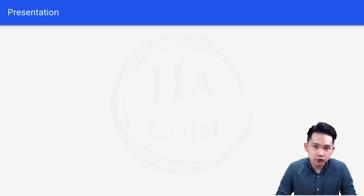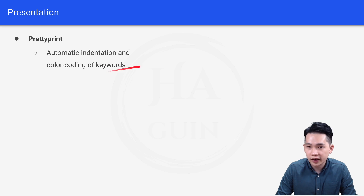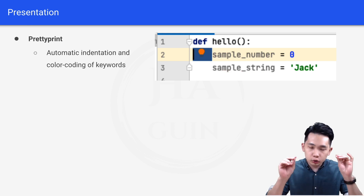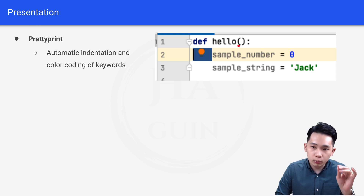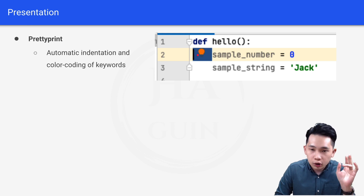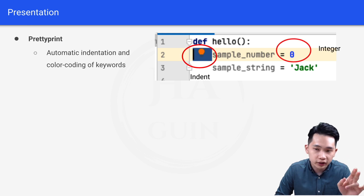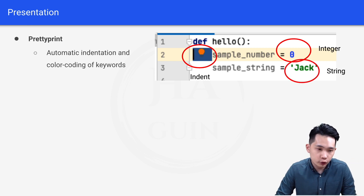The next feature is presentation. Under this we have pretty print, which means automatic indentation and color coding of keywords. For example, when I type 'def hello():' and press Enter in PyCharm, it automatically indents the next line for me. Also, integers are shown in blue and strings are shown in green — this is pretty print.